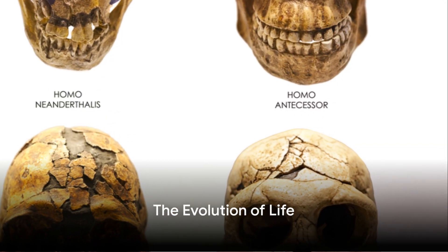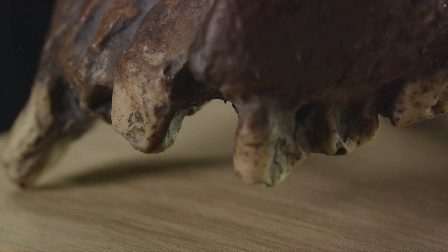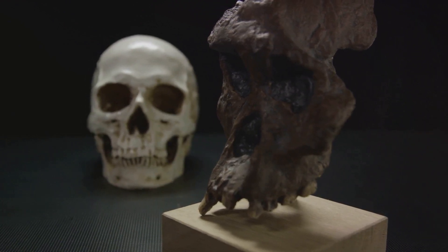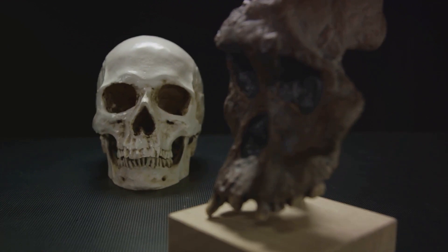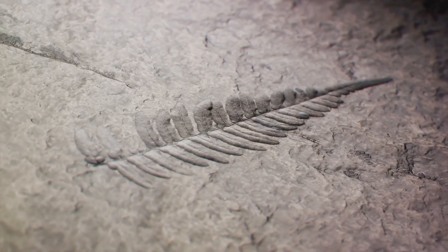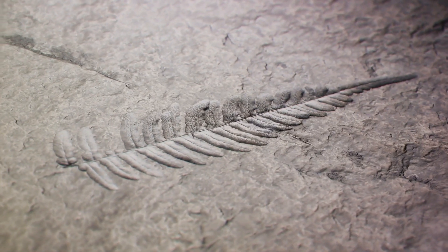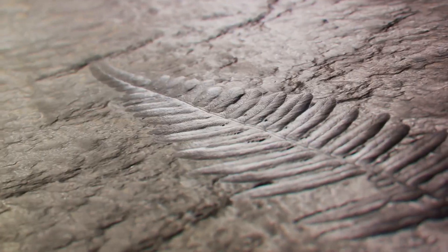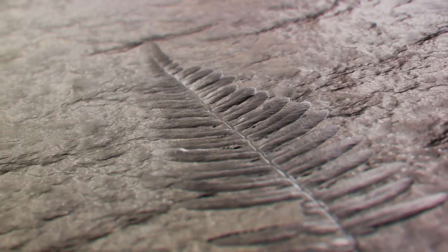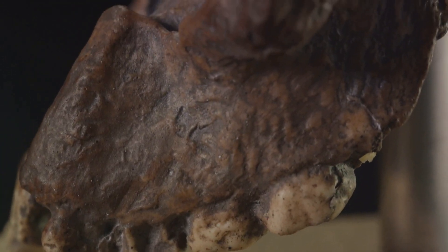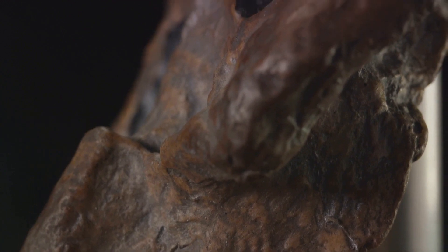Life, once sparked into existence, began a slow but steady march towards complexity. This journey, spanning billions of years, is known as evolution. The first significant leap in this process was the rise of multicellular organisms, a monumental shift from the single-celled life forms that previously dominated our planet. This transition opened the floodgates for an event now known as the Cambrian Explosion. Over a relatively short period, life diversified dramatically, birthing an array of complex creatures and establishing the blueprint for the ecosystems we see today. From the depths of the oceans to the highest peaks, life colonized every corner of our planet, adapting to changing environments and growing ever more diverse.